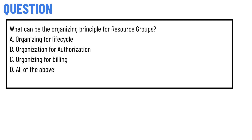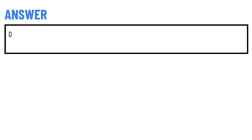Our today's question is: what can be an organizing principle for resource groups? Option A: Organizing for life cycle. Option B: Organization for authorization. Option C: Organizing for billing. Option D: All of the above. The correct answer of the question?